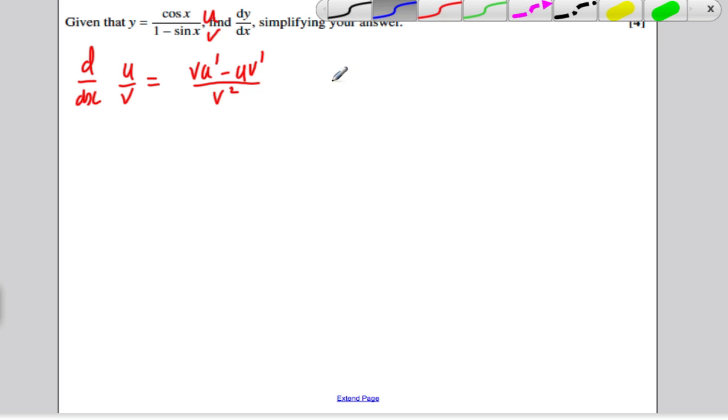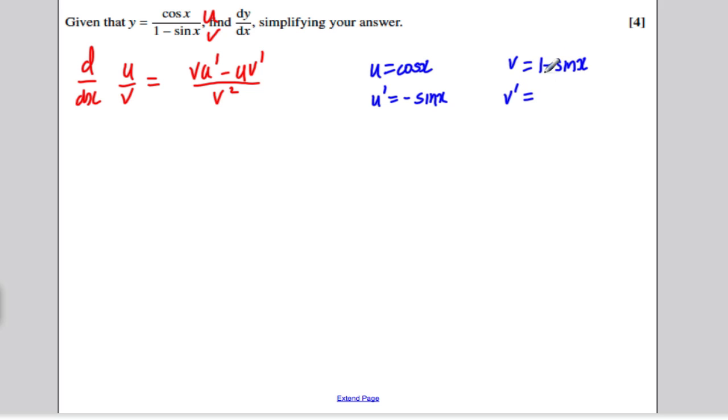So the key with this question here is to define our u and our v. u is cos x, so the differential u dash would be negative sin x. And we also know we're defining v to be 1 minus sin x, so the differential of v, or the differential of 1 is 0, the differential of minus sin x is minus cos x. All we have to do now is substitute these into our formula and simplify and we're done.